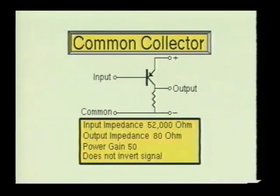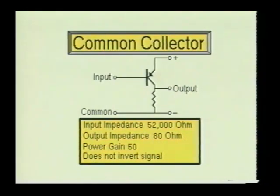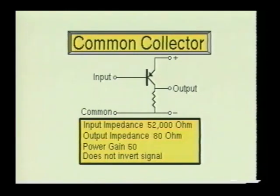The common collector, which is also referred to as an emitter-follower circuit, has a typical input impedance of approximately 52,000 ohms. The output impedance of this circuit is usually very low, somewhere around 80 ohms. The common collector also provides a current gain of about 50 and a power gain of about 50. However, this circuit provides no voltage gain. The common collector is generally used as a buffer amplifier, and it does not invert the incoming signal.